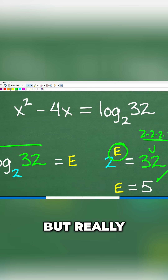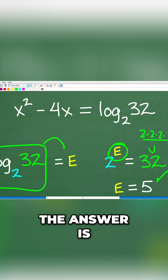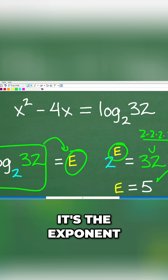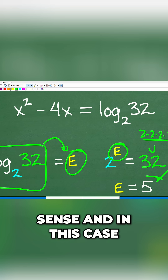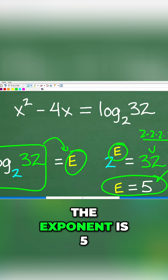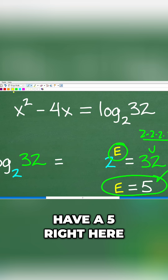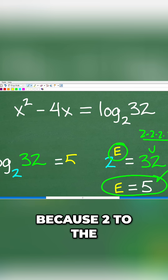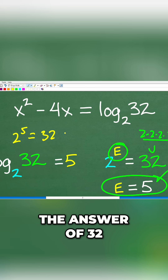But really, log base 2 of 32 — when you plug this into your calculator, the answer is the exponent. Because remember: bacon and eggs. So hopefully this makes sense. In this case, the exponent is 5, so we have a 5 right here, because 2 to the fifth is equal to the answer of 32.